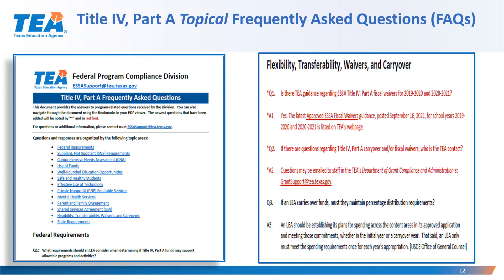For example, under Flexibility, Transferability, Waivers, and Carryover, the first two questions and responses are new for the November 2021 release. Question three on this page is a question and response that had previously been in past Title IV Part A FAQ documents.